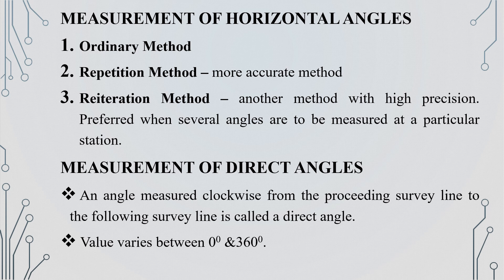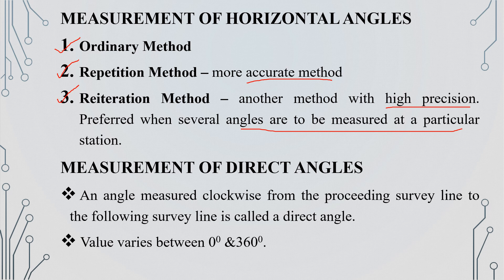We are going to use methods for measuring horizontal angles. The first method is the ordinary method. The second method is the repetition method, which is more accurate. The third method is the reiteration method, which is a high precision method. In the repetition method, we repeat the same angle measurement. In the reiteration method, we use the same direction — structured method.